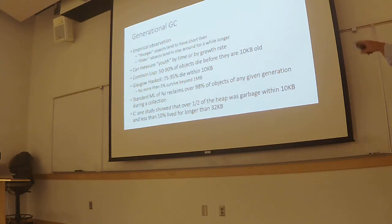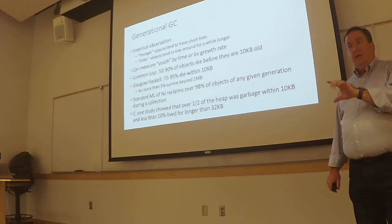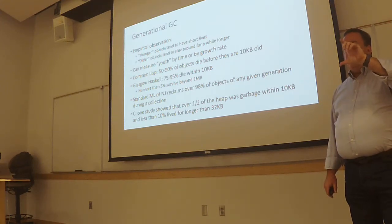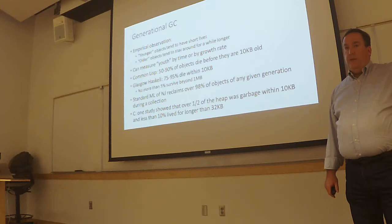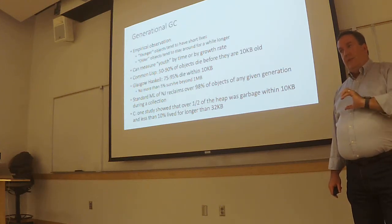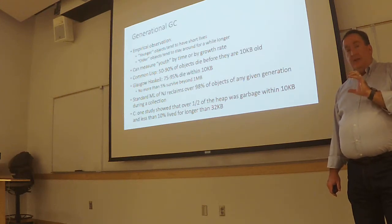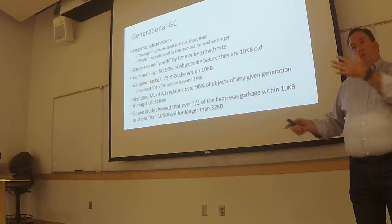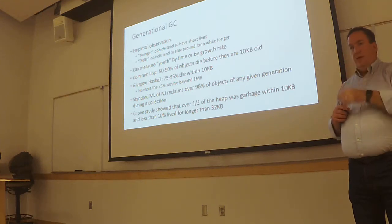Another observation I didn't put on this slide: the larger the object, the more likely it is to stay around for a while. So one separate strategy is to look at the size of what you're allocating. Some systems use a mark-and-sweep collector for big objects, because big objects don't really fragment your heap as much. A stop-and-copy approach literally has two heaps — big stuff and small stuff — with big stuff managed by mark-and-sweep and small stuff managed by a copy collector.